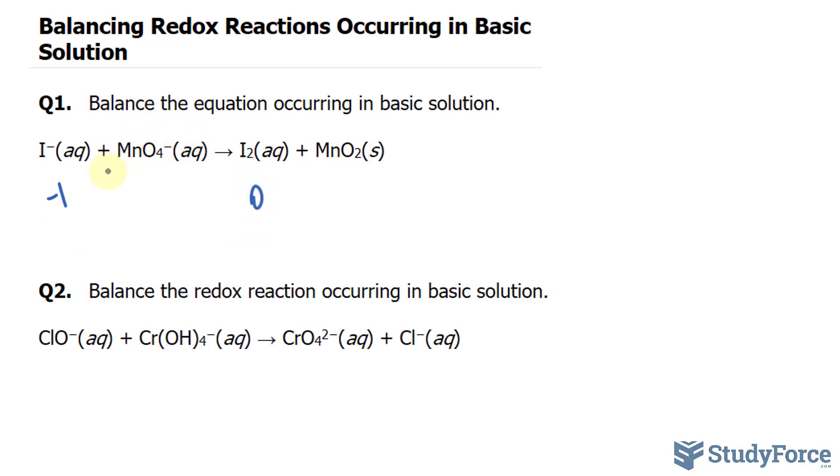And the oxidation state of MnO4 minus, that's a manganate ion, we have to do a little bit of math. The whole molecule has a charge of negative 1, and the oxidation state of oxygen is negative 2. There are 4 oxygens, so if we solve this equation, if we solve for x,